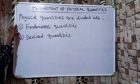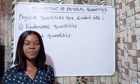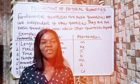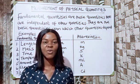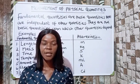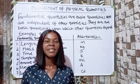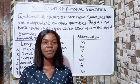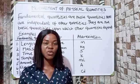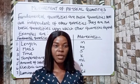These physical quantities are divided into two: they are fundamental quantities and derived quantities. Fundamental quantities are those quantities that are independent of other quantities — other quantities depend on them. Their units are called fundamental units.